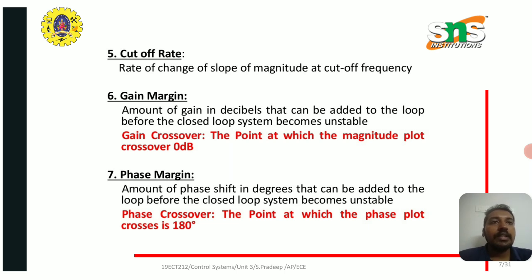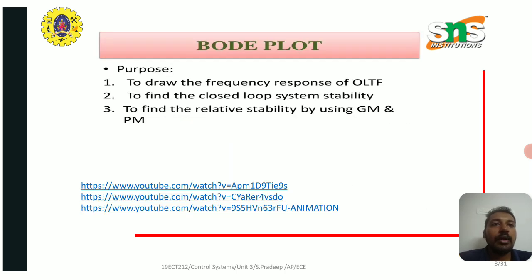Cutoff rate is the rate of change of slope of the magnitude at cutoff frequency. Gain margin is the amount of gain in decibels that can be added to the loop before the closed loop system becomes unstable. The gain crossover is the point at which the magnitude plot crosses over 0 dB.